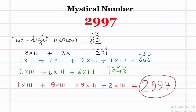Note that 4 steps are required to reach 2997 from the two digit number 83.